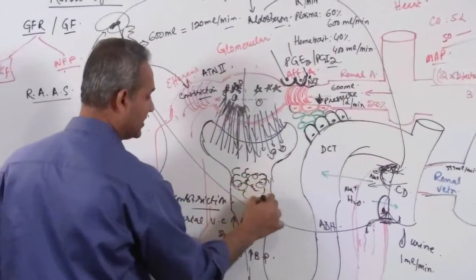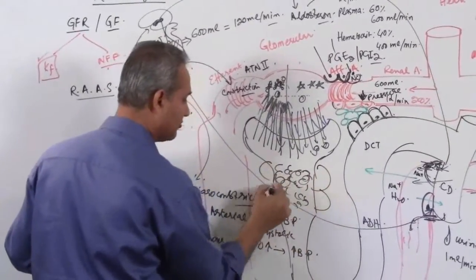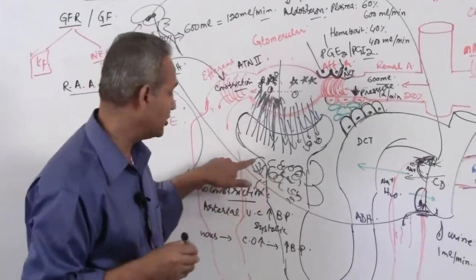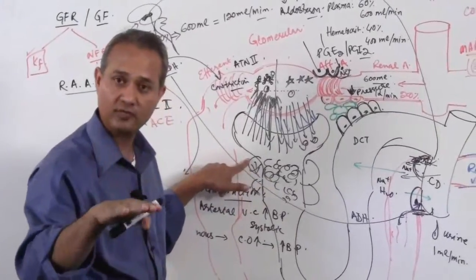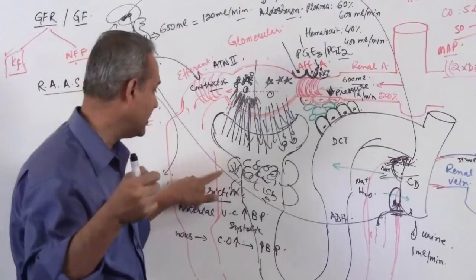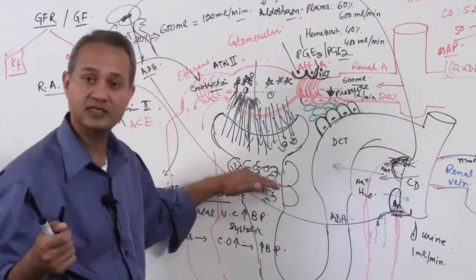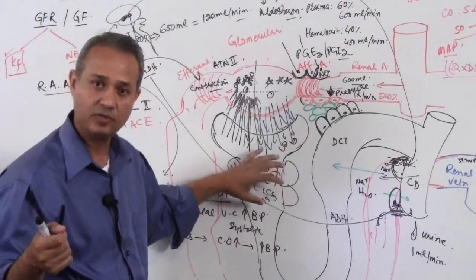So let's say there are casts, the cells, proximal convoluted cells are destroyed. Why are they destroyed? Either these are destroyed due to hypoxia, so low volume causes destruction, acute tubular necrosis can occur. Hypoxic regions cause cells to be broken down. Those cells, tubular casts, are accumulated here.